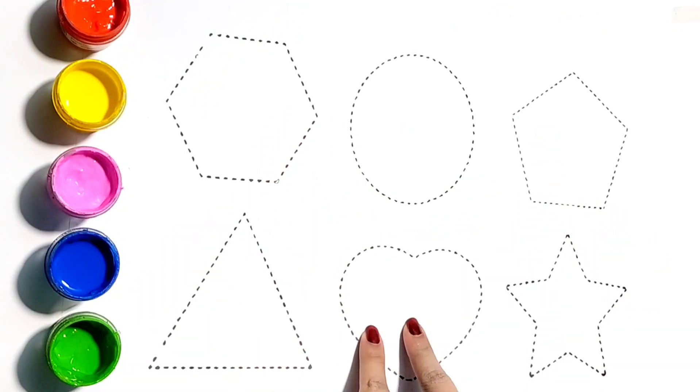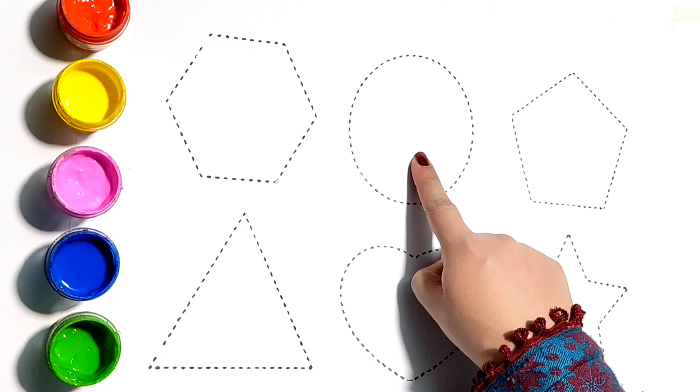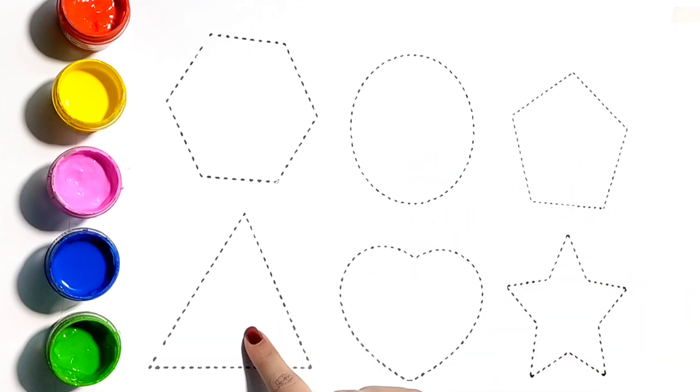Hello, little friends! Today we are going to learn 2D shapes as Hexagon, Circle, Pentagon, Triangle, Heart, and Star.